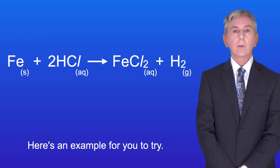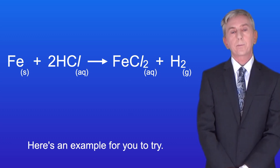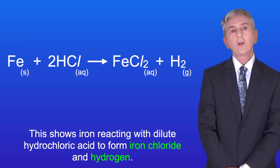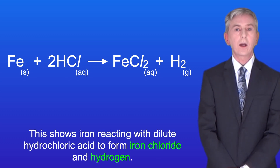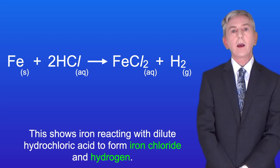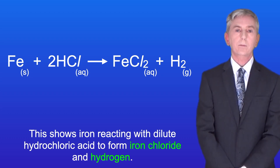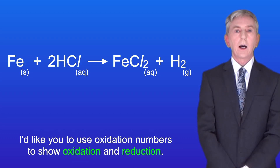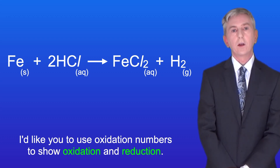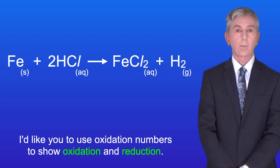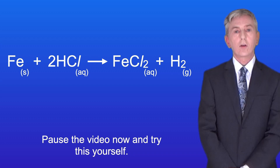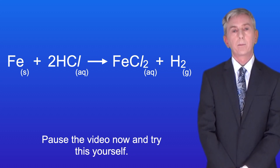Here's an example for you to try. This shows iron reacting with dilute hydrochloric acid to form iron chloride and hydrogen. I'd like you to use oxidation numbers to show oxidation and reduction. Pause the video now and try this yourself.